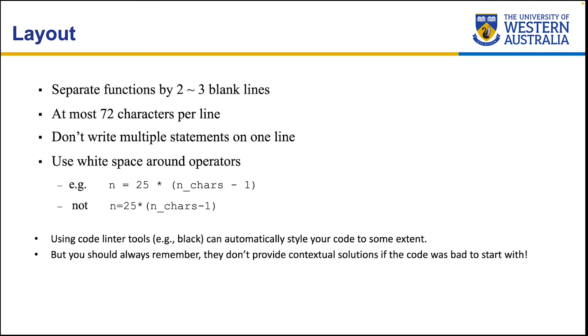So that's how you use black. There's some more guidelines on how to use automated linting tools in the labs as well, so do look through. But you should always remember, they don't provide contextual solutions if the code was bad to start with. So for example, you gave it a really bad variable name, like ABC. It's not going to pick it up and try to replace it for you with some more meaningful name. So you do have to provide it with meaningful names, meaningful comments, meaningful documentations, things like that. But do use these sparingly, especially when you have to submit your code later on.